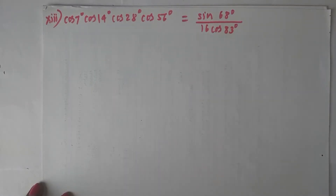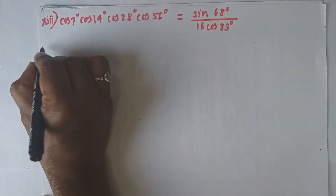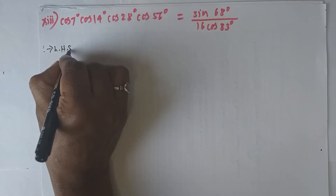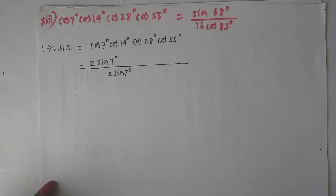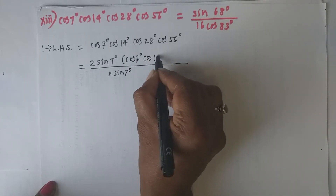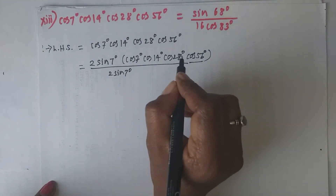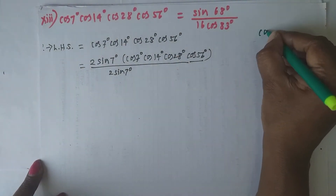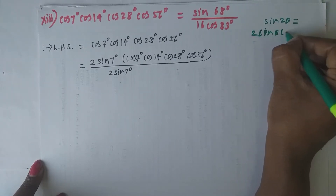Next problem: prove cos7° · cos14° · cos28° · cos56° = sin68° / (16·cos83°). Write down the left hand side as it is. I will multiply numerator and denominator by 2sin7°. Using the formula sin2θ = 2sinθ·cosθ with θ = 7°, we get 2sin7°·cos7° = sin14°.